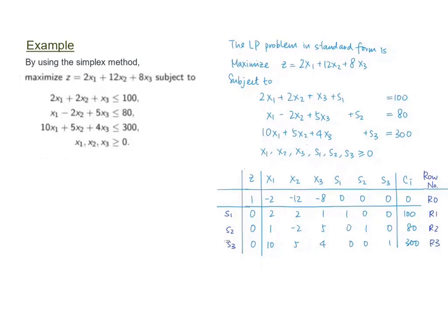We rewrite this system into the tabular form. We observe that s1 occurs only in the first constraint with coefficient positive 1; likewise, s2 occurs only in the second constraint with coefficient 1, and s3 only occurs in constraint 3 with coefficient positive 1. They are called basic variables. In this system, we can take x1, x2, and x3 to be 0, s1 equals 100, s2 equals 80, s3 equals 300, and z equals 0.